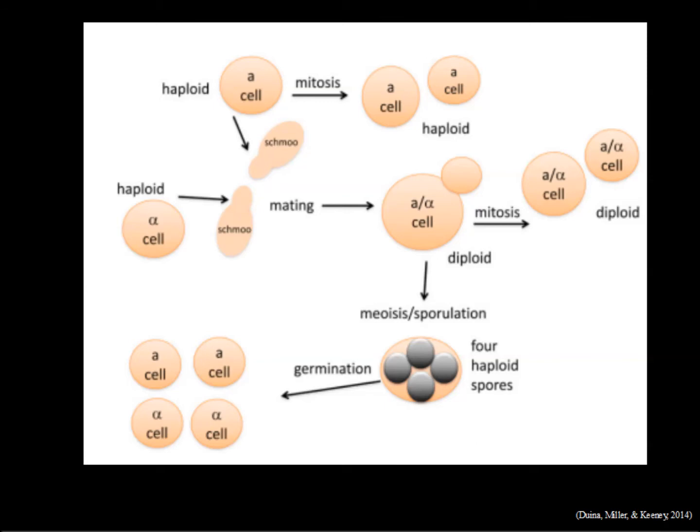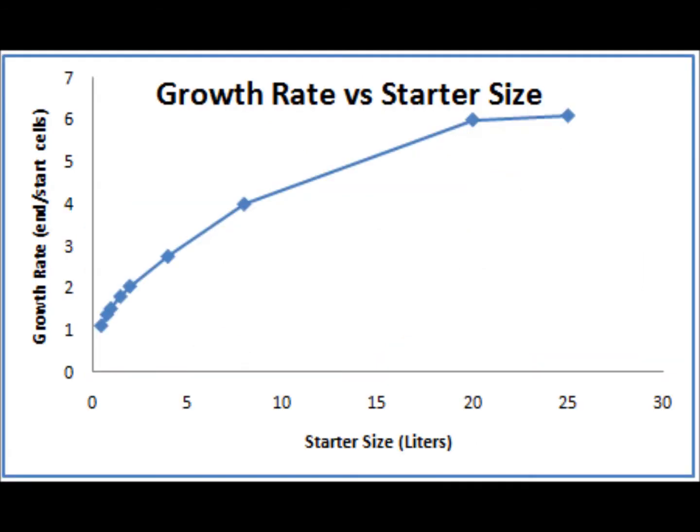Both haploid and diploid yeast cells divide by budding. The division cycle begins with a single unbudded cell. This cell buds, the bud grows to nearly the size of the parent cell. The nucleus divides, and the two cells separate into two unbudded cells. The cycle then begins again for both of the cells.